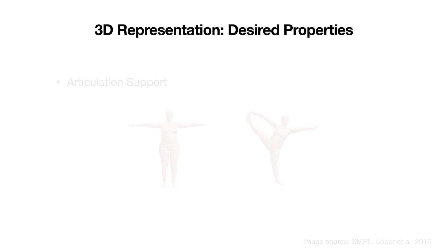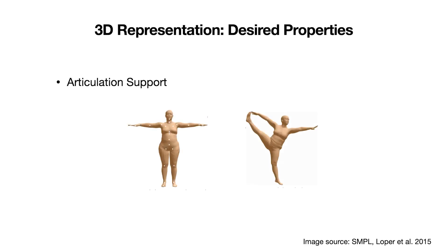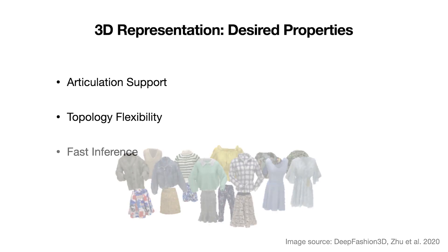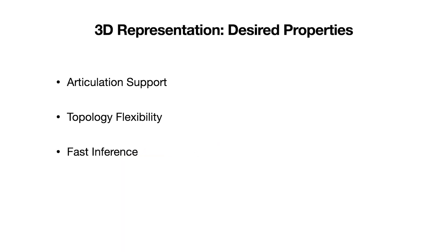The key to this is a new representation of 3D shape with the following properties. First, the representation should support articulation. Like a parametric human body model such as SMPL, articulation allows us to easily control and generate new animations. Second, to support various clothing types in a unified framework, the representation should be flexible enough to handle different and changing clothing topologies. Third, it should support fast inference, which is required by many real-time applications.